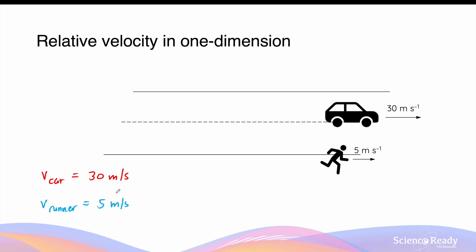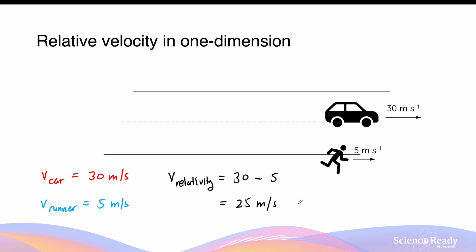Both are going to the right. That means the relative velocity of the car is equal to its own velocity — its true velocity, 30 meters per second — minus the velocity of the observer, that is the runner, so 5 meters per second. This gives you a value of 25 meters per second to the right.